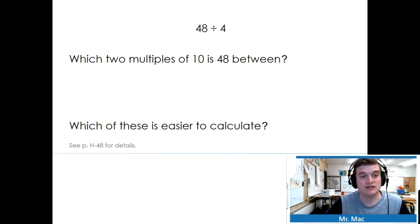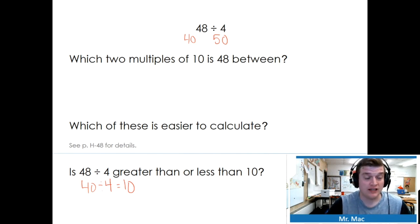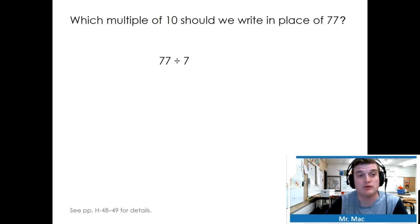Which two multiples of 10 is 48 between? 48 is between 40 and 50. Which of these is easier to calculate? 40 divided by 4 or 50 divided by 4? Well, obviously 40. Is 48 divided by 4 greater than or less than 10? We know that 40 divided by 4 equals 10. Since 48 is greater than 40, we know 48 divided by 40 is going to be greater than 10.